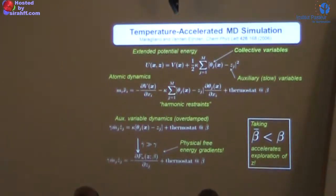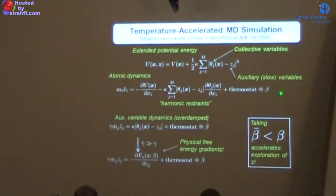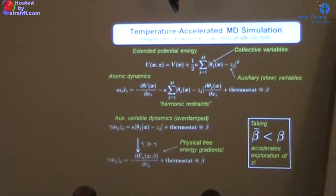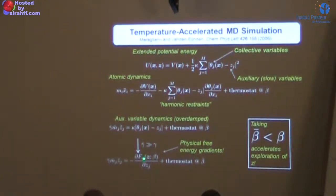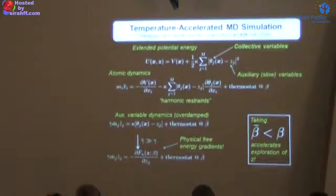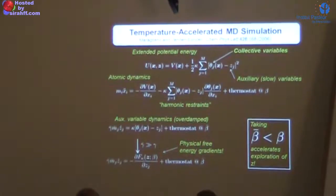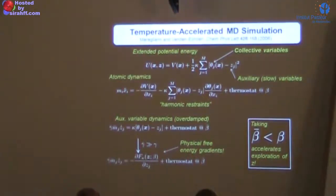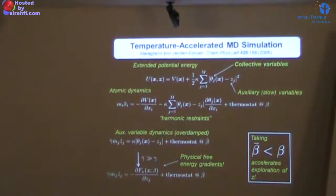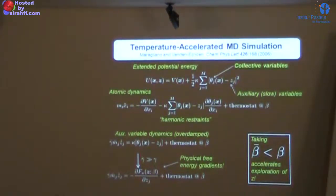The free energy being approximated is computed at the atomistic temperature beta, not beta-bar. Importantly, it's not the true free energy with the delta function — it's the mollified free energy, where the delta function has been replaced by a Gaussian. In the limit where the Gaussian variance becomes infinitely small, you recover the delta function. The spring constant effectively sets the resolution of the free energy surface.